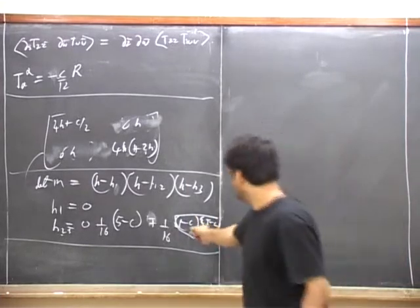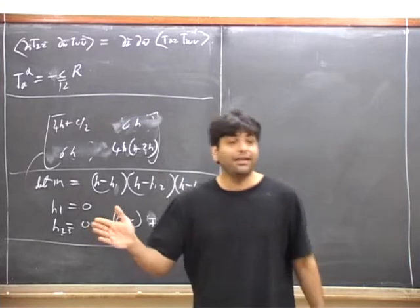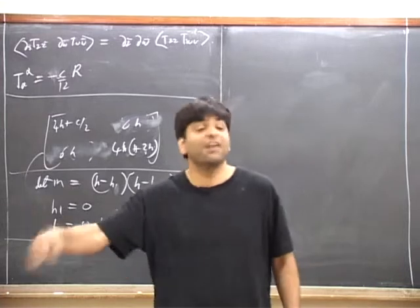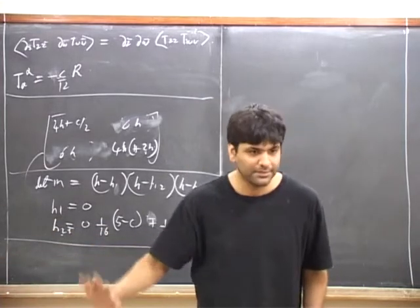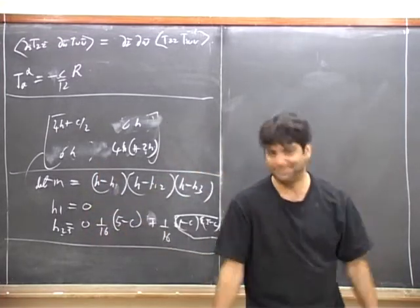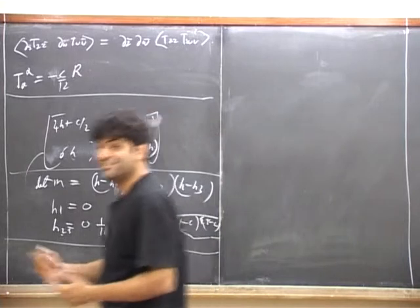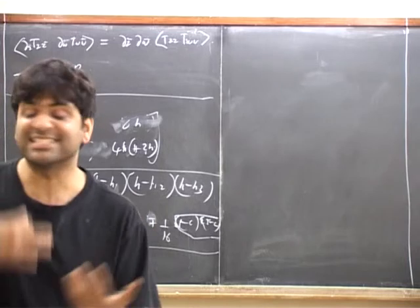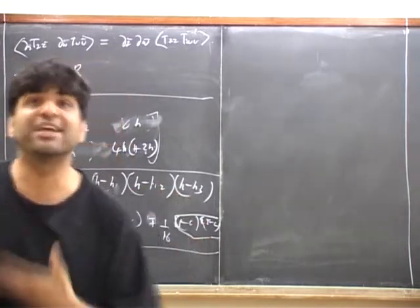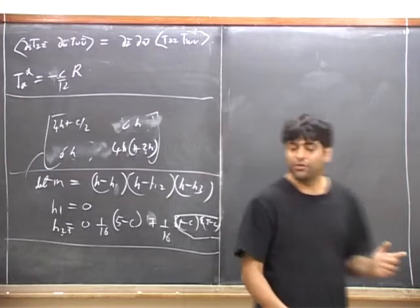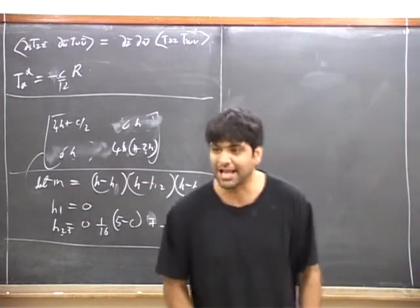Given the value of C, already the simple calculations tell us that not all values of scaling dimensions of primary operators are allowed — there's some restriction. Now, this is the restriction we got from level 2. You could try to do the same calculation at level 3, and try to satisfy all constraints from unitarity. If you go ahead and do that — though I don't think in this class we'll actually go through this calculation — you find that when C is less than 1, unitarity severely constrains the possibilities.